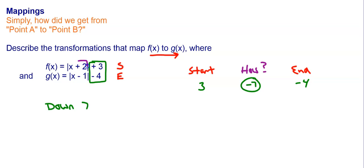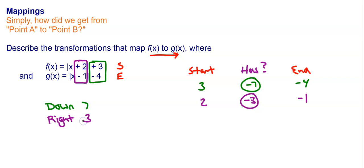Then we can compare the inside numbers. I'm starting at two and ending at negative one. How do I get from two to negative one? I have to subtract three — two minus three is negative one. This is inside, so remember: subtracting is right, adding is left. So if I subtract three on the inside, that's going to be right three. Then I move to the front — the signs didn't change and the numbers didn't change. So the only transformations we need to go from f of x to g of x are down seven, right three.